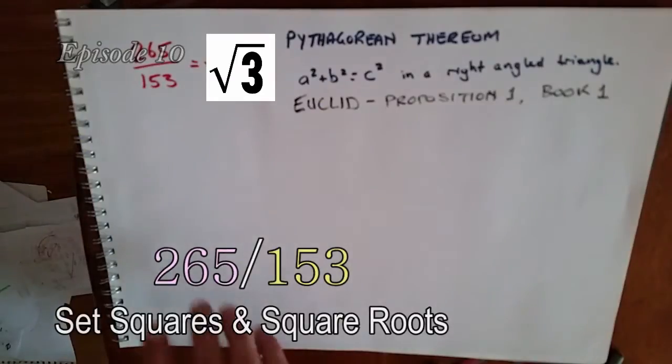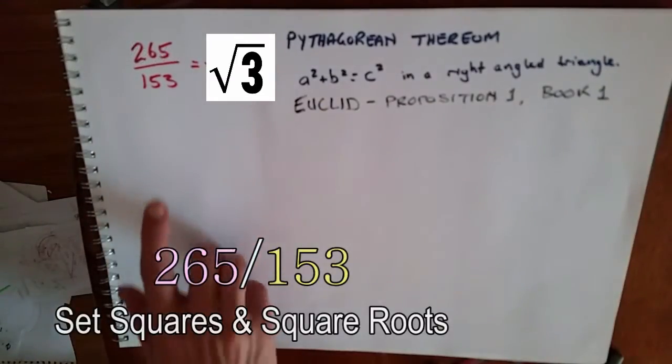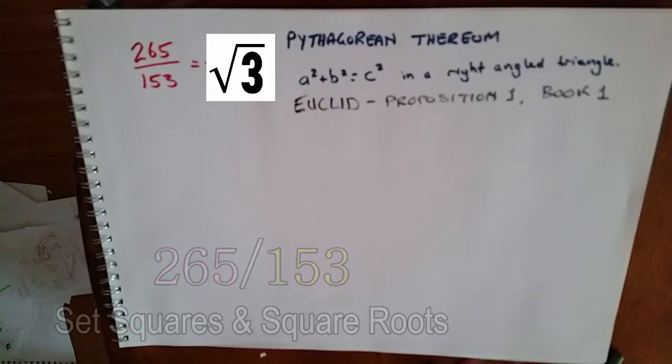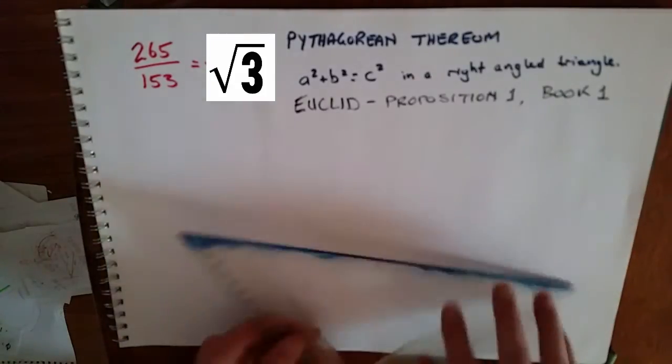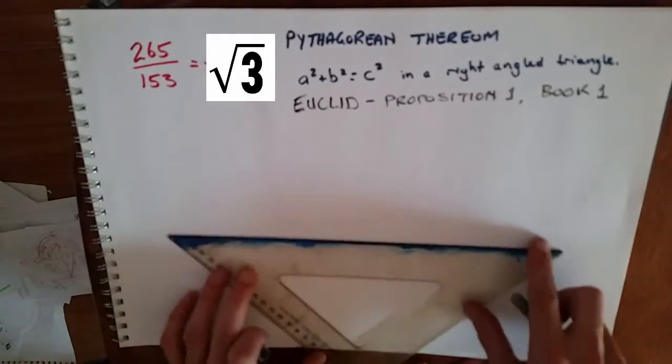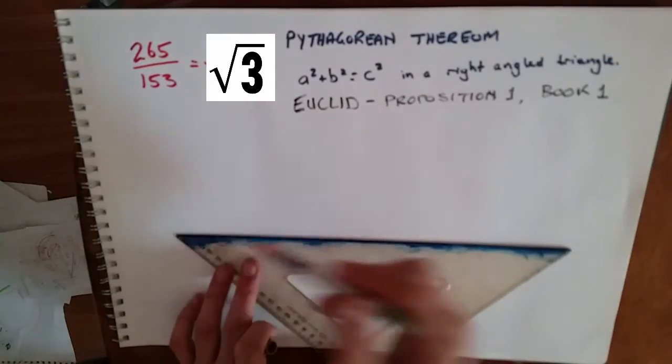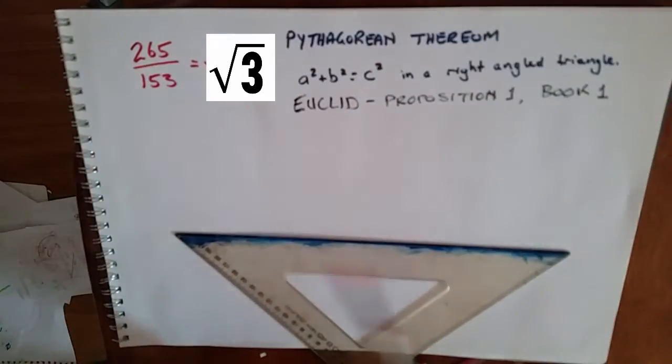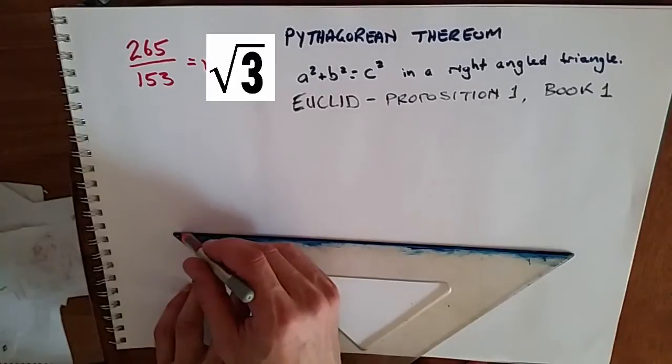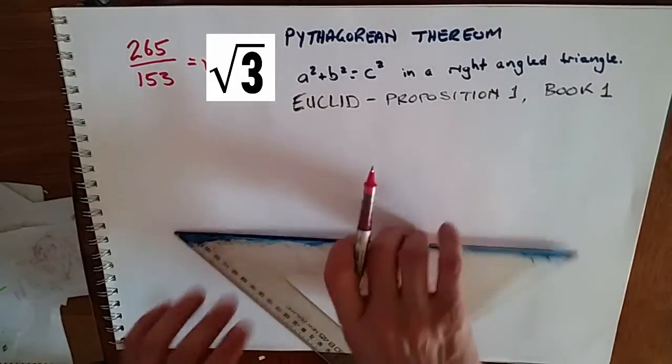Okay, let's prove that 265 over 153 is the square root of three and that that ratio is part of the vesica piscis. We'll start with a construction line, we're going to use Pythagorean theorem and Euclid's Elements Proposition 1, Book 1, creating an equilateral triangle.